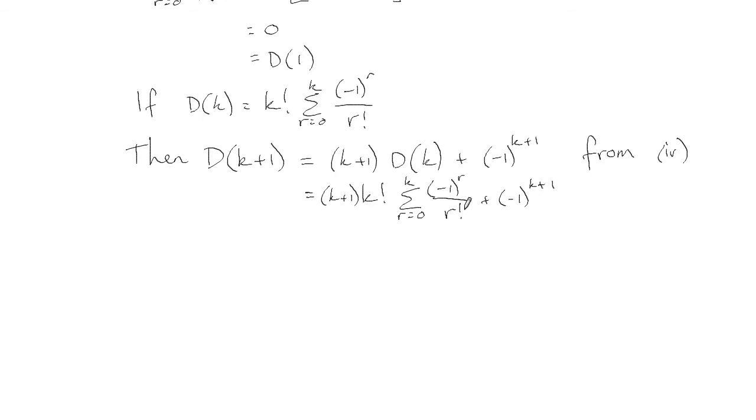So we're trying to show this but with k plus 1. So what we want this to end up as is k plus 1 factorial sum r equals 0 to k plus 1 of negative 1 to the r on r factorial. So just that with k plus 1 instead of k. So that's where we want this to end up. We want to manipulate this until it turns into that.